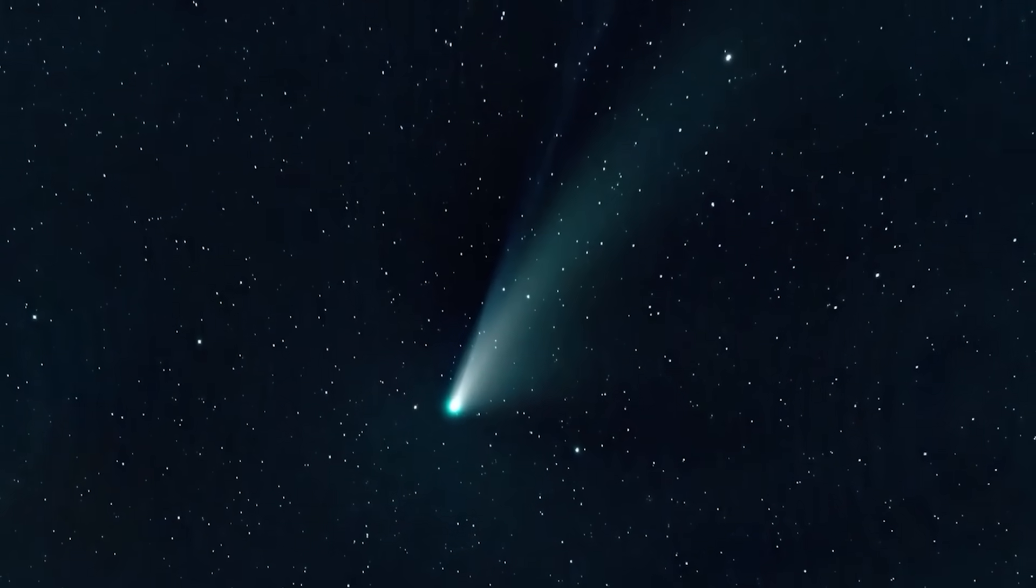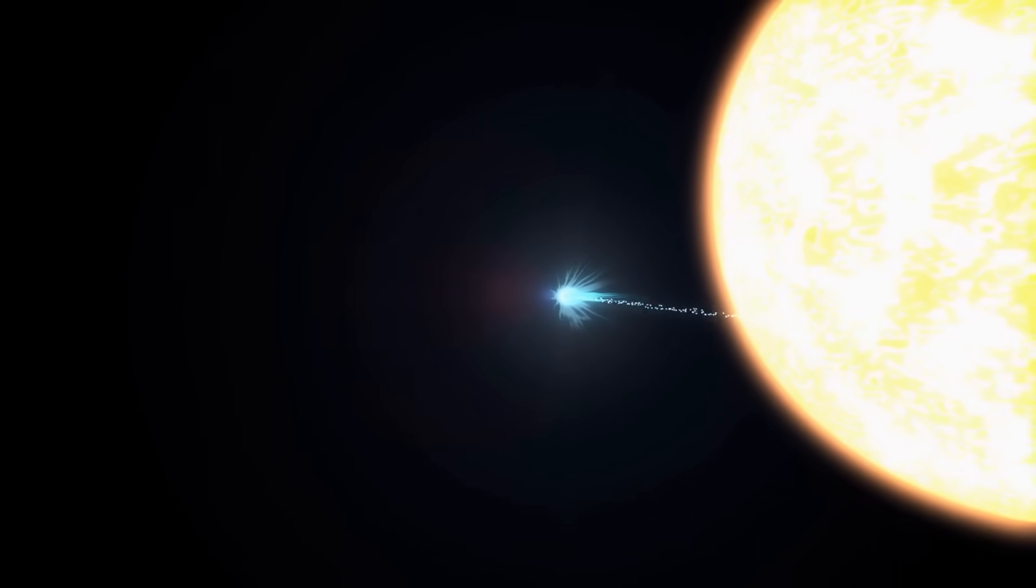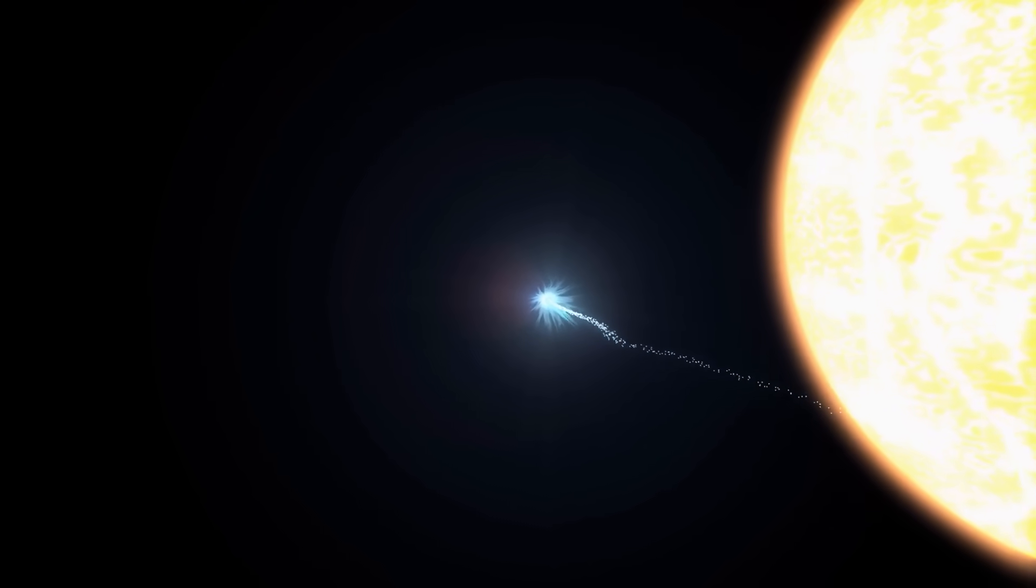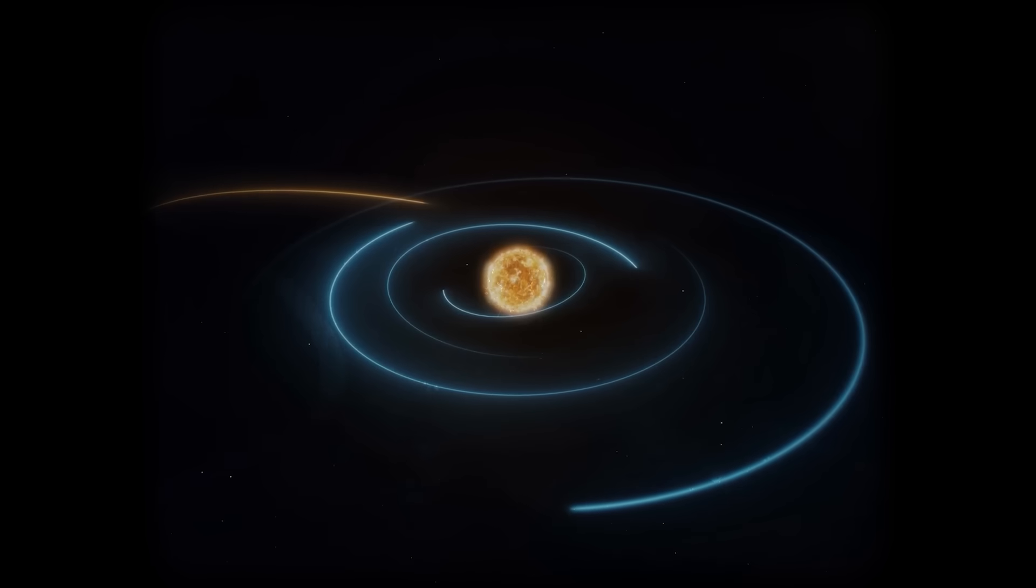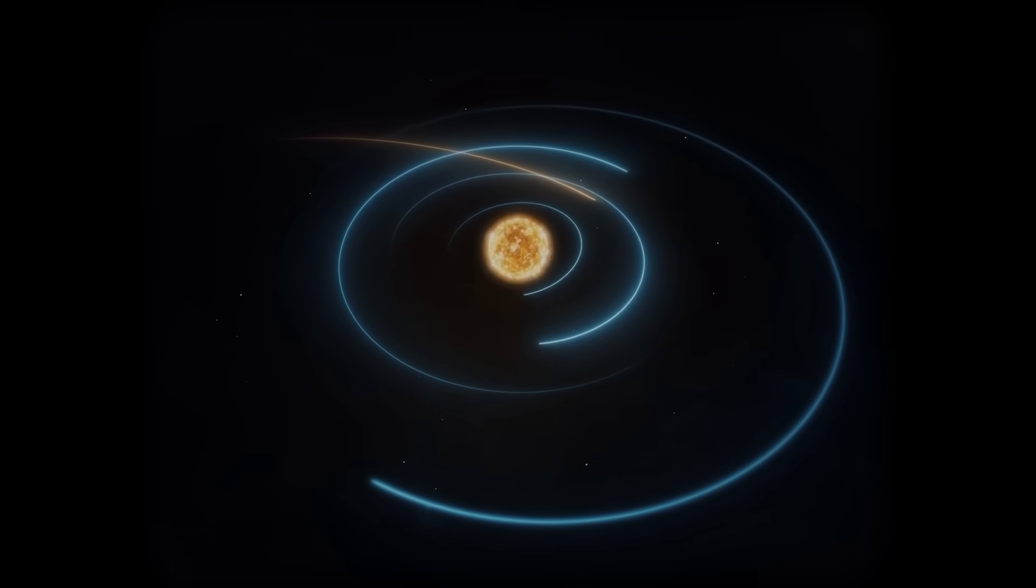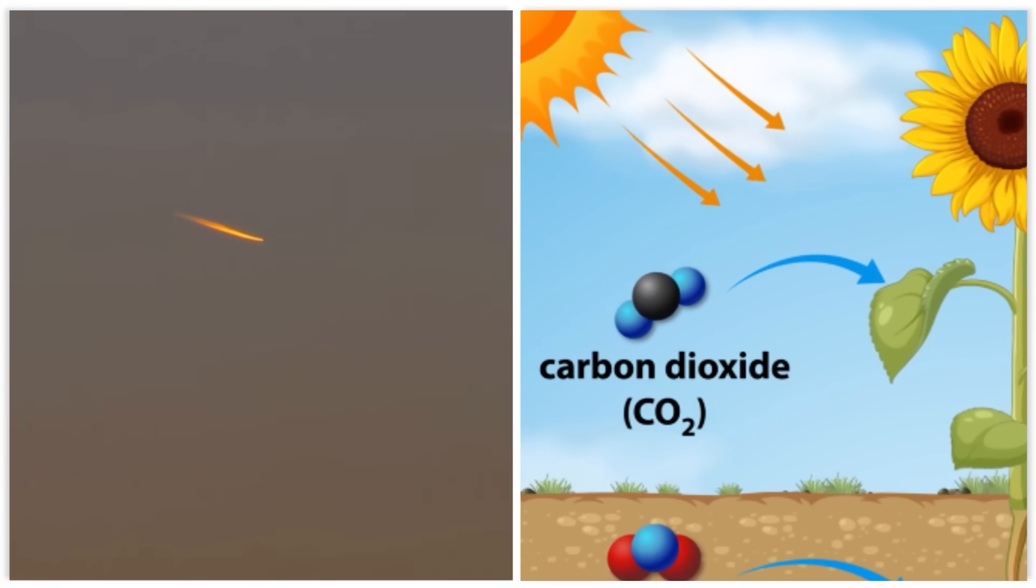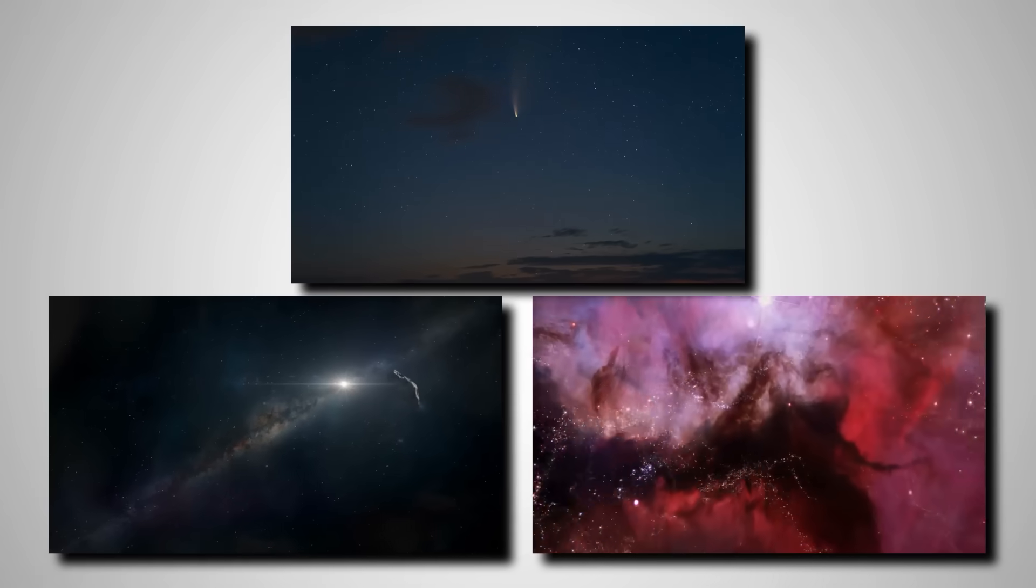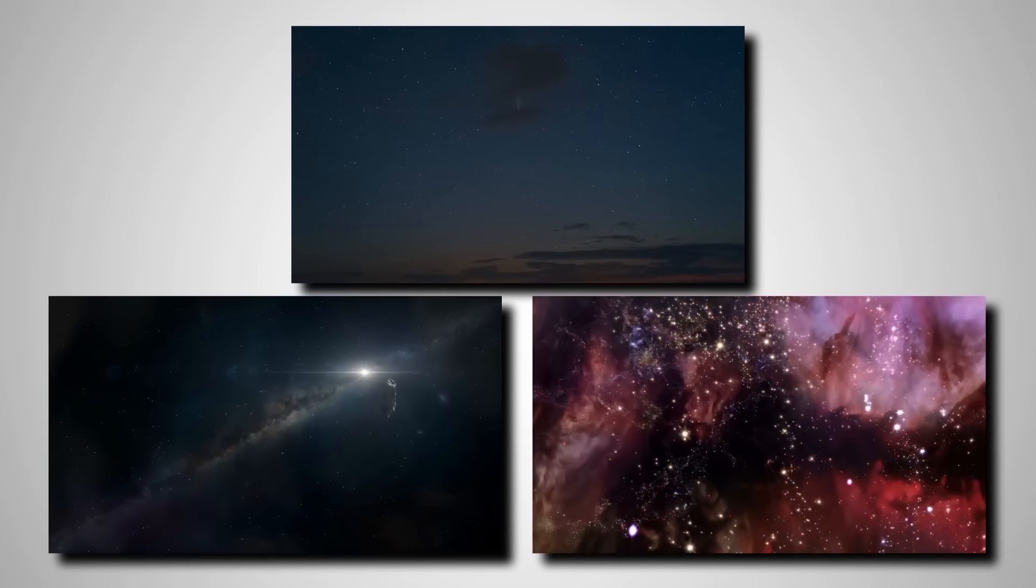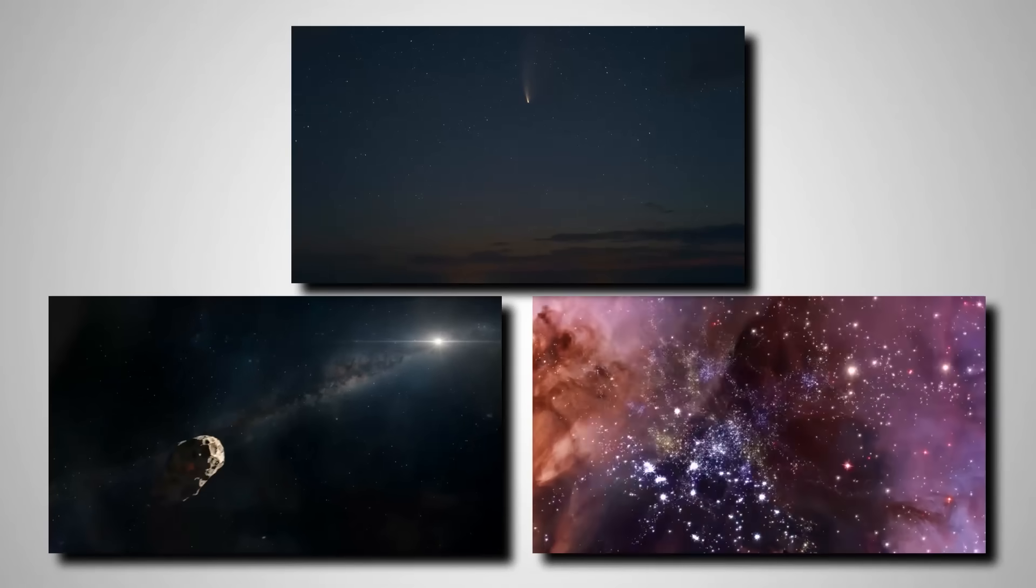When scientists first observed the copious amounts of carbon dioxide and the puzzling scarcity of water, they were confronted with a cosmic recipe that defied our understanding of comet formation. Comets in our solar system, born from the icy fringes of our sun's domain, are typically water-rich. This fundamental difference suggests an origin in an environment dramatically unlike our own. To put it mildly, it's like finding a plant that thrives on pure carbon dioxide and wilts at the sight of water. This astounding wow factor forces a fundamental re-evaluation of how comets, or comet-like objects, can form across the galaxy.